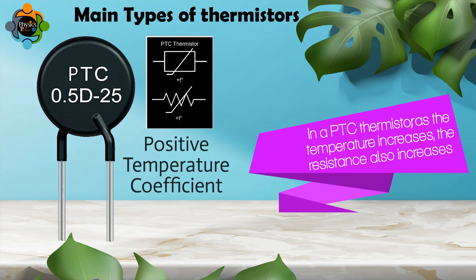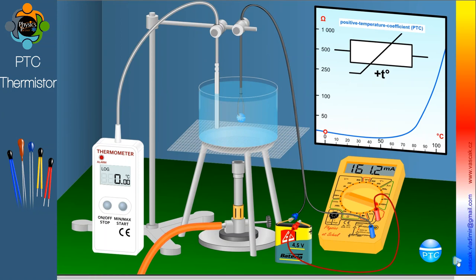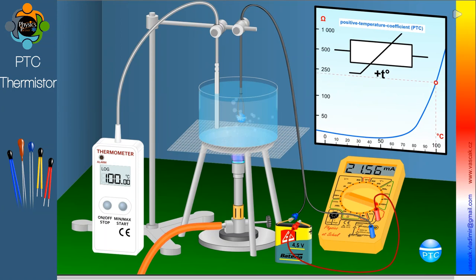Now let's move on to the positive temperature coefficient, or PTC thermistor. In a PTC thermistor, as the temperature increases, the resistance also increases. In a similar setup, at zero degrees Celsius we have the least resistance and the current is 161.2 milliamperes.